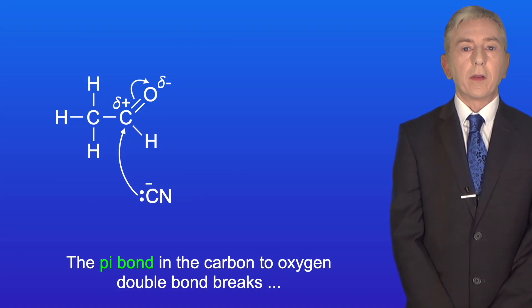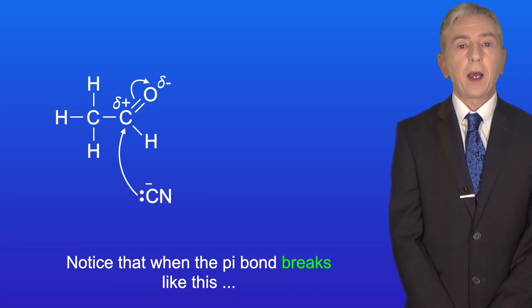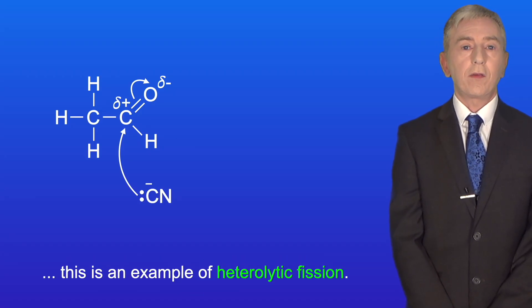The pi bond in the carbon to oxygen double bond breaks and the pair of electrons moves onto the oxygen atom. Notice that when the pi bond breaks like this this is an example of heterolytic fission.